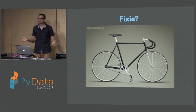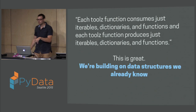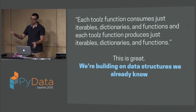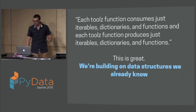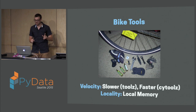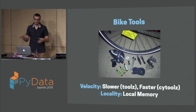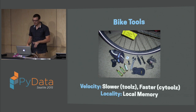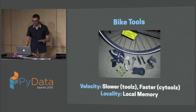So the first question: Toolz and functional programming — should it be a fixie? Well, maybe. Toolz consumes iterables, dictionaries, and functions, and it produces iterables, dictionaries, and functions. This is great because we're building on data structures we already know. Toolz is more like your bike tools — it's a little bit slower working in CPython, but it can be a little faster with CyToolz, where someone rewrote Toolz in Cython and passed the exact same test suite. You're still working in local memory, constrained by local memory things. We'll talk about Dask later, which you can use with Toolz.